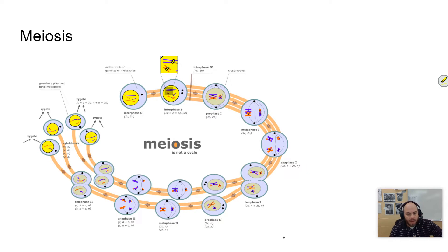Meiosis is a process that creates haploid gametes. Those haploid gametes are four genetically different cells, as opposed to mitosis, which creates two genetically identical cells. That process of meiosis has two divisions.